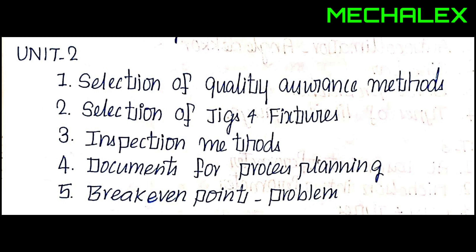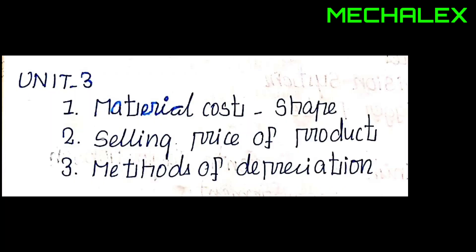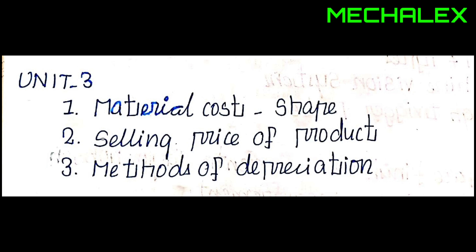The theory is 80%. There are three topics. There is the material cost — one shape is the volume, per kilogram volume, then another kilogram mass — so we can find out how much the material cost price is.